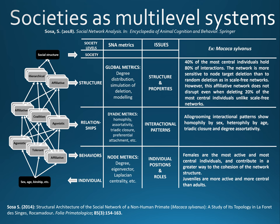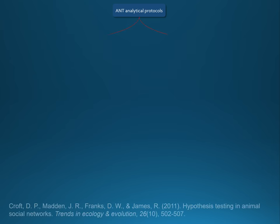The idea of ANT was to bring this kind of multi-level network approach, and it becomes more than that. ANT is structured according to analytical protocols, and we divided these types according to the data types that the user may use, according to Croft and collaborators' paper in 2011. We separate them according to individual association or individual direct interactions.